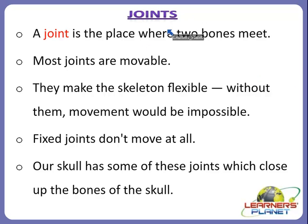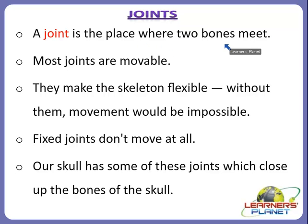First of all we should know what is meant by a joint. A joint is the place where two bones meet. Most of the joints are movable. Joints occur where two bones meet — they make the skeleton flexible, and without them our movement would be impossible. Muscles are also necessary for movement because they are the masses of elastic tissue that pull our bones when we move.